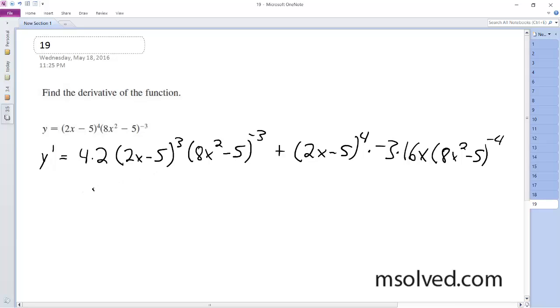Alright, so then we have, let's try to think here. So we just have 8, 2x minus 5 raised to the 3rd, 8x squared minus 5 raised to the negative 3, plus,